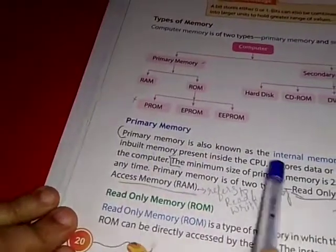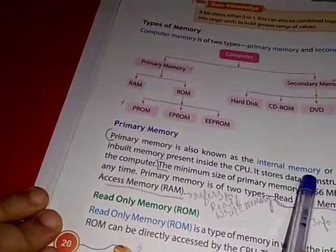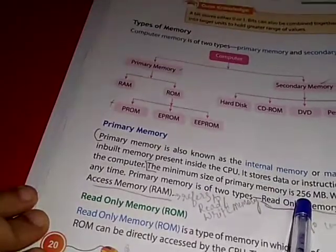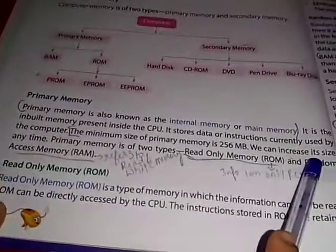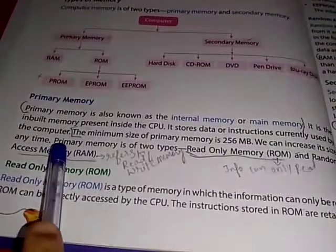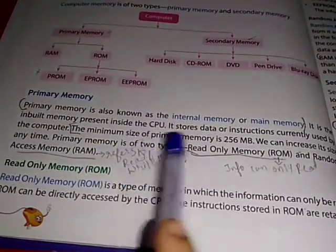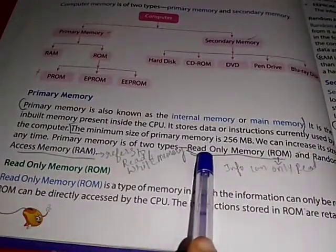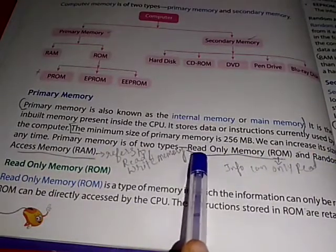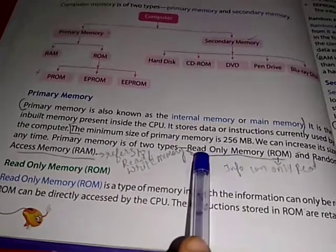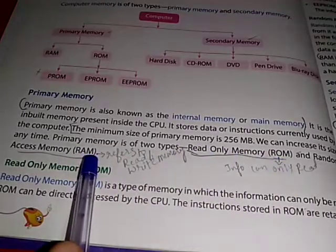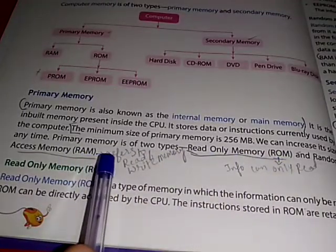Primary memory is also known as internal memory or main memory. The minimum size of primary memory is 256 MB, and we can increase its size anytime. Primary memory is of two types: read-only memory (ROM) and random access memory (RAM). ROM is read-only, while RAM refers to read and write memory.